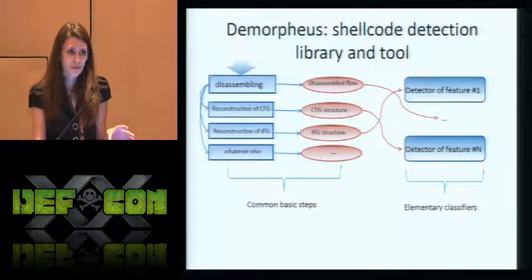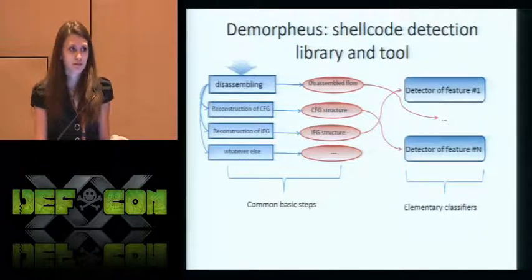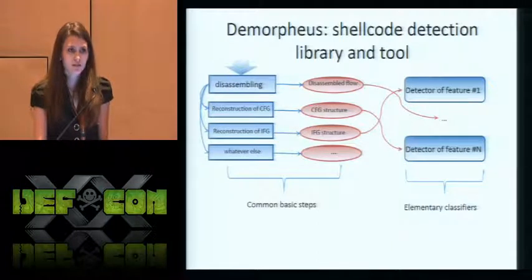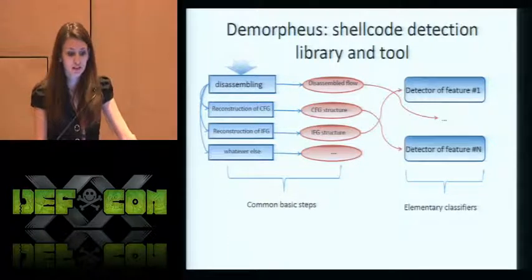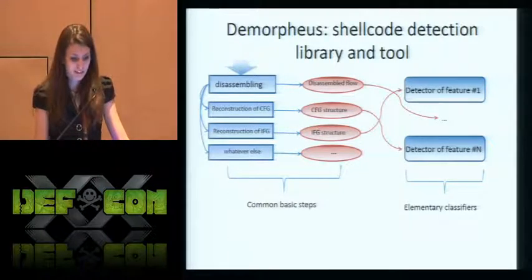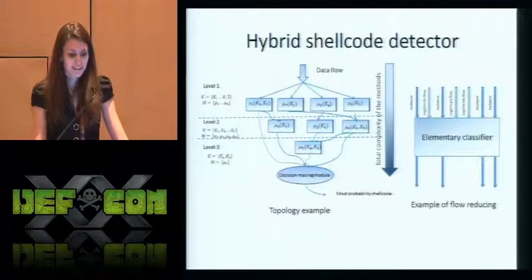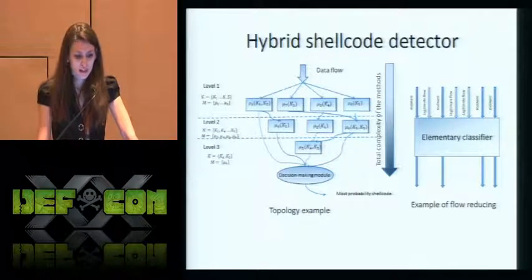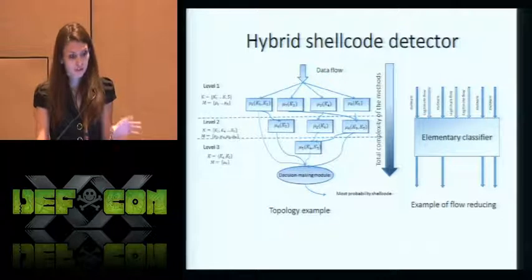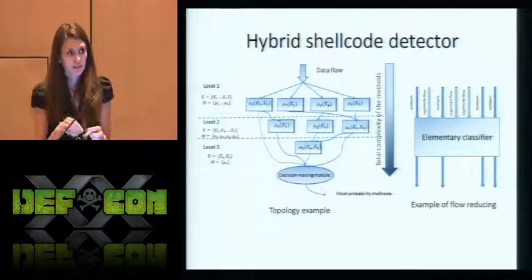During analysis of existing shellcode methods, we noticed that almost all of them can be presented as some kind of combination of elementary classifiers or detectors of specific shellcode features. Moreover, all of them use some common steps during their analysis, like a disassembly stage, reconstruction of the control flow graph, and reconstruction of the instruction flow graph. Thus, it seemed reasonable for us to implement a shellcode detection library as described. Here is the main idea of our hybrid shellcode detector: we tried to construct an optimal data flow graph from elementary classifiers implemented in the shellcode detection library.